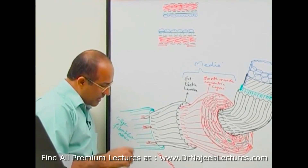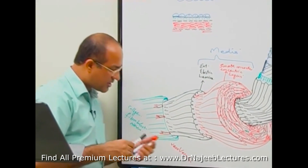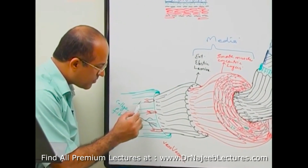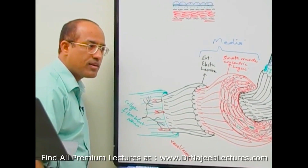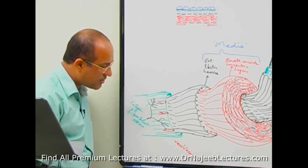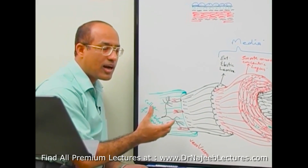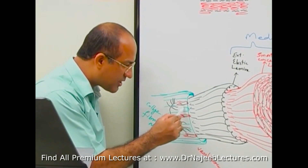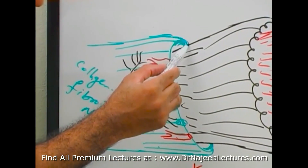The arteries also receive sympathetic innervation, with sympathetic nerves releasing epinephrine or norepinephrine. Additionally, the outer part of large and medium-sized arteries is drained by lymphatics. So the adventitia contains collagen, fibroblasts, nerves, vasa vasorum, and lymphatics.